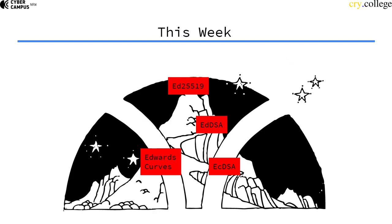This week we're going to learn about yet another form of elliptic curves: so-called Edwards curves. First, we'll go over the classic elliptic curve signing algorithm ECDSA, then we'll learn about Edwards curves and see how we can use them to construct signature algorithms. Finally, we'll look at the signature system Ed25519, which — as you might have guessed from the name — has something to do with Curve 25519.